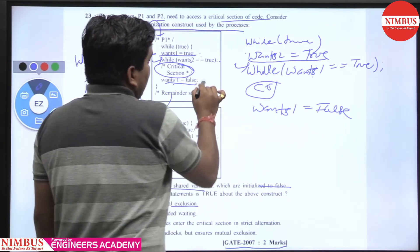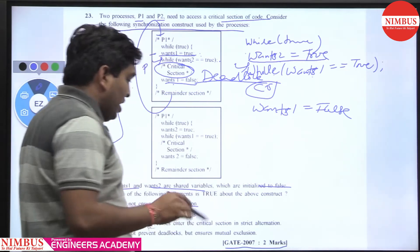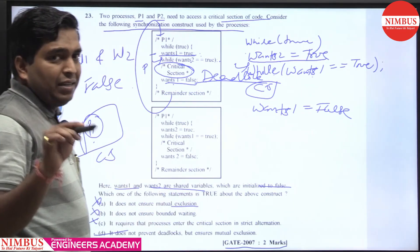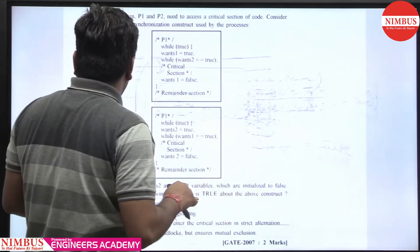So that creates a deadlock, but it always ensures mutual exclusion. Getting my point? So option D is the right answer. It does not prevent deadlock but ensures mutual exclusion.